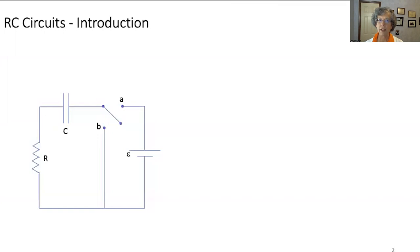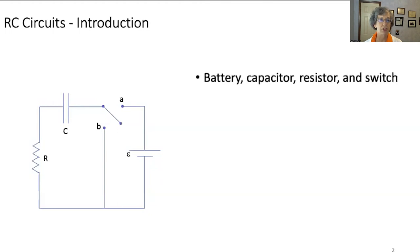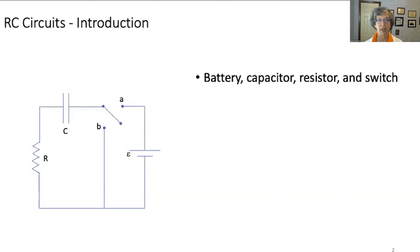Here you see a schematic of an RC circuit set up to both charge and discharge a capacitor. This circuit has a battery, a capacitor, a resistor, and a switch. The single pole double throw switch allows this circuit to both charge and discharge. The capacitor has capacitance C, the resistor is ohmic with resistance R, and the battery is ideal with an EMF of epsilon.